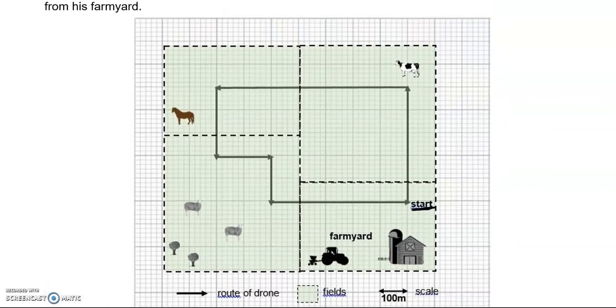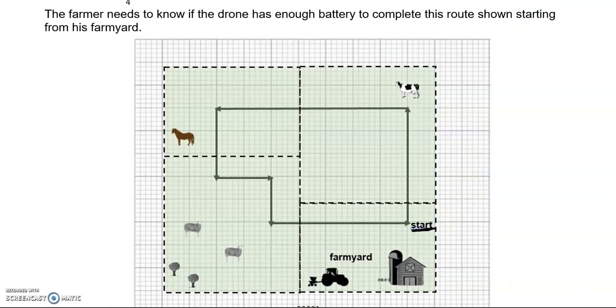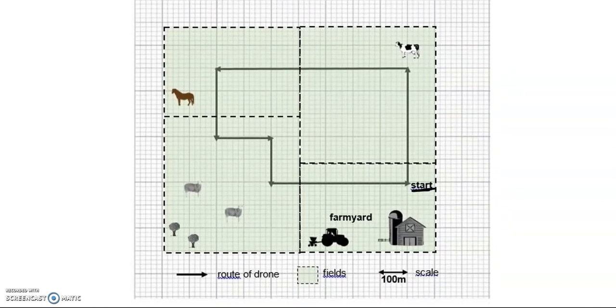Let's have a look at how long the route is. We've got a scale given to us which is that this length is equal to 100 meters. So we'll have a look at how many of these lengths there are all together. And we can see from here there is 1 up to this point, 2, 3, 4, 5, 6, 7, 8, 9, 10, 11, 12, 13, 14...